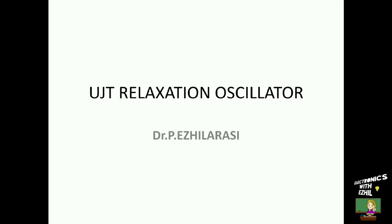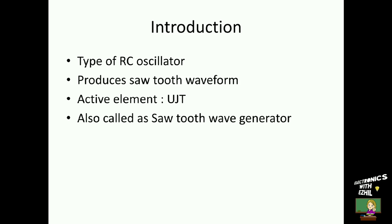Hello viewers. In this video, let us discuss the working principle, waveform, and the frequency of oscillation for a UJT relaxation oscillator. UJT relaxation oscillator is a type of RC oscillator which produces a sawtooth waveform without an AC input signal. In the circuit, UJT is used as an active element whose switching times are in the order of nanoseconds only. Since it produces a sawtooth waveform, it is also called a sawtooth wave generator.